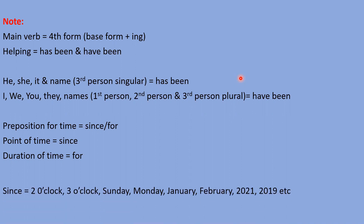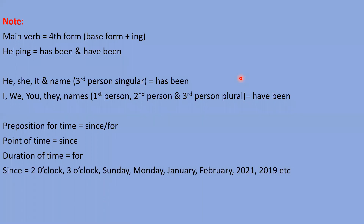For example: if I say 'I have been teaching you since two o'clock' or 'since three o'clock,' or 'since Sunday,' 'since Monday,' 'since January,' 'since February,' 'since 2021,' 'since 2019' — for these expressions of time, we should use 'since,' because these are points of time.